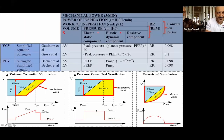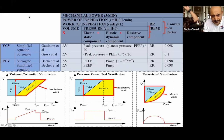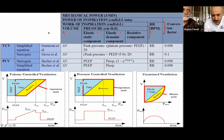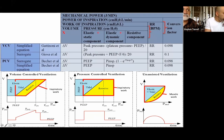There are multiple calculation methods. The gold standard to measure mechanical power or work is to measure the area under the volume-pressure curve — basically the integral of volume versus pressure.